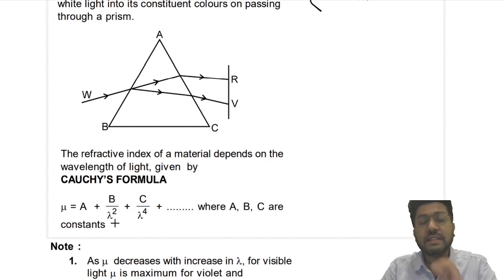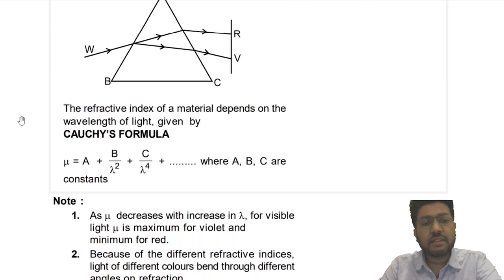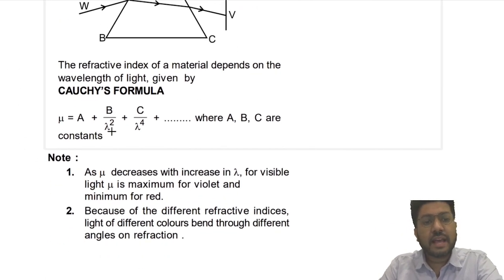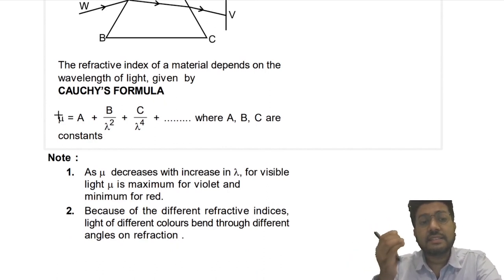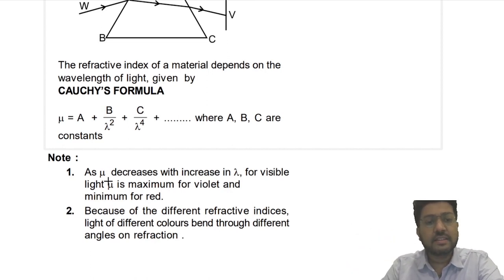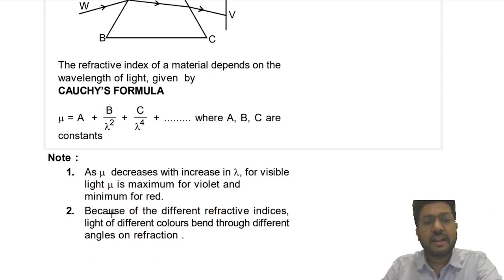This λ is wavelength in vacuum. So from Cauchy's formula, we can see that as wavelength increases, μ decreases. Red has maximum wavelength, so red has least refractive index. As μ decreases with increase in wavelength, for visible light, μ is maximum for violet and minimum for red.